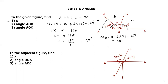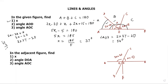Now for angle AOC, which is the obtuse angle covering both 2x minus 20 and x together, that gives 3x minus 20. Substituting x = 37: 3 × 37 − 20 = 111 − 20 = 91 degrees. So angle AOC is 91 degrees.